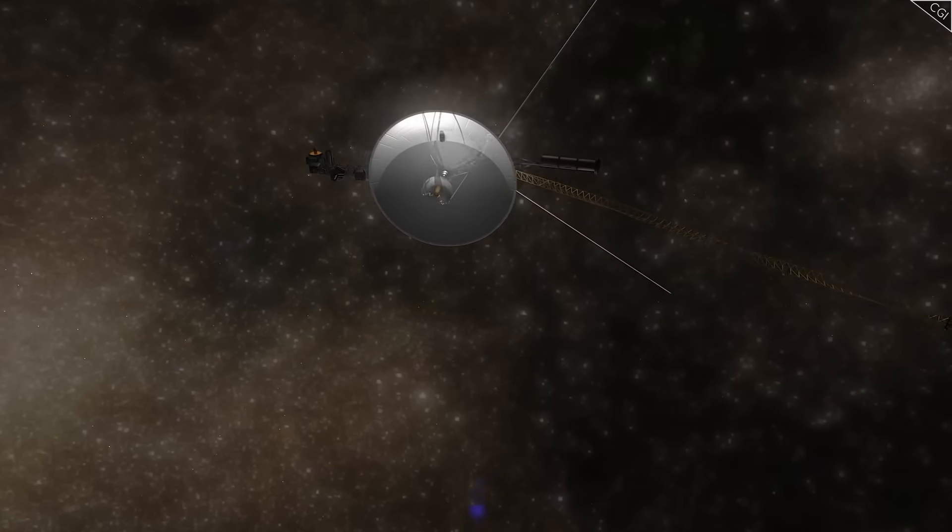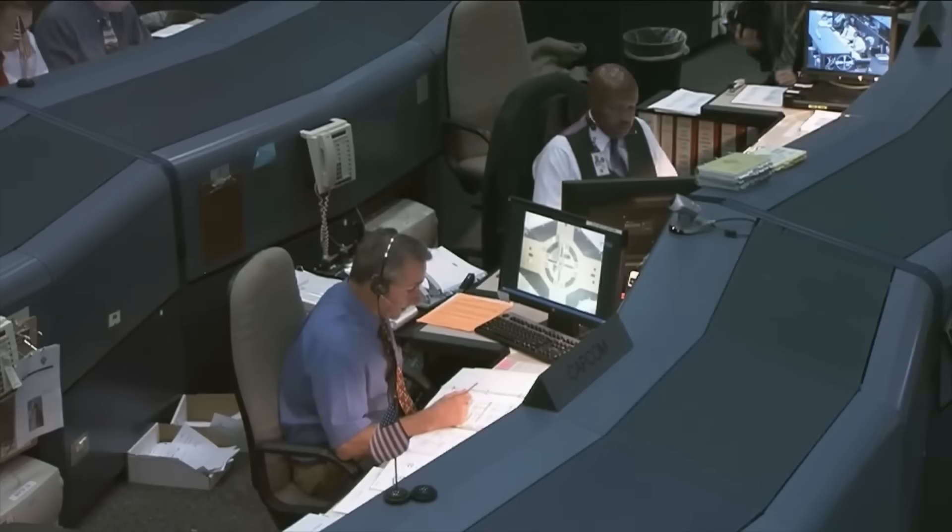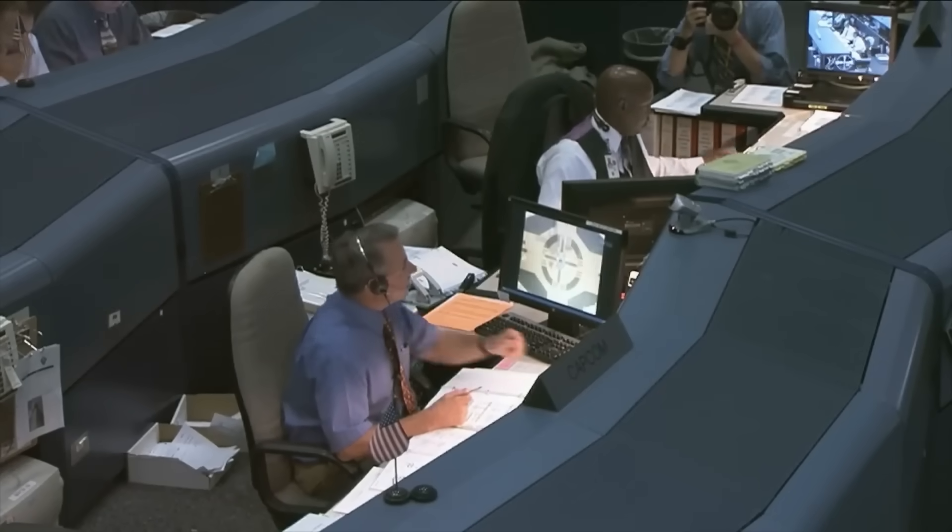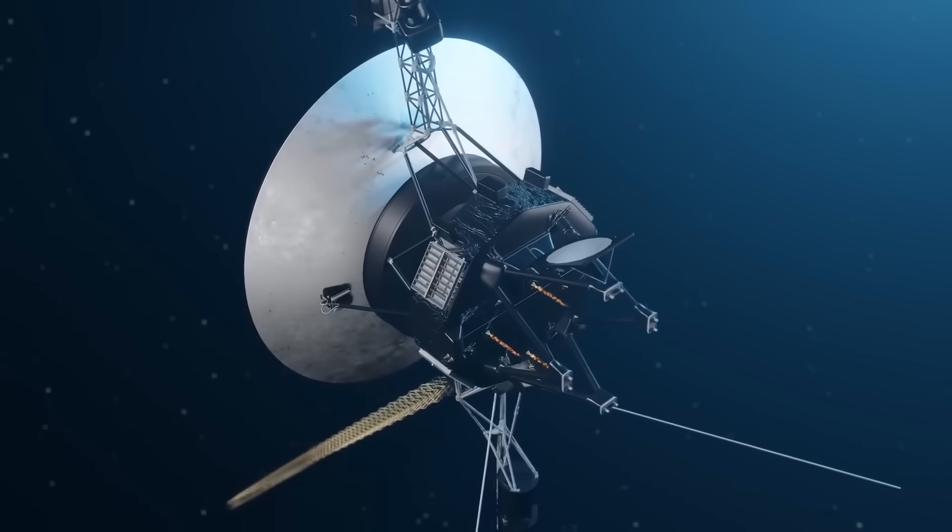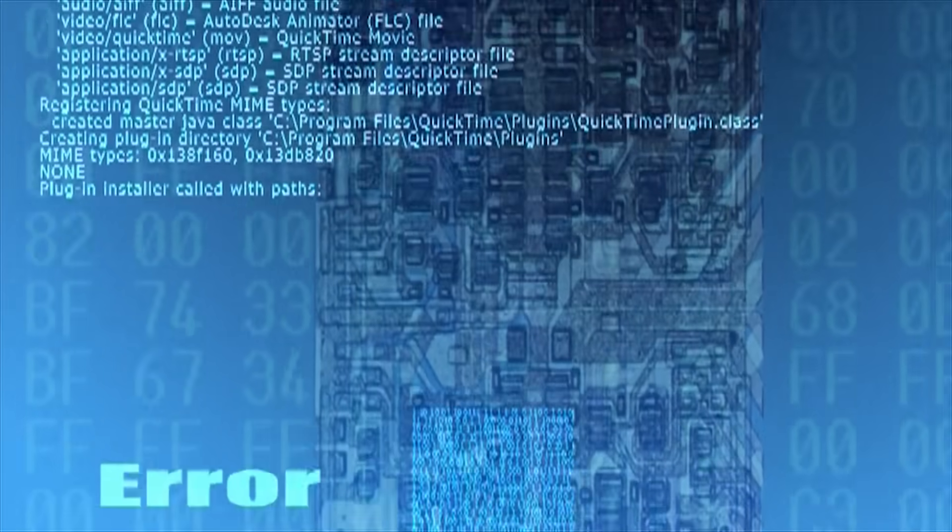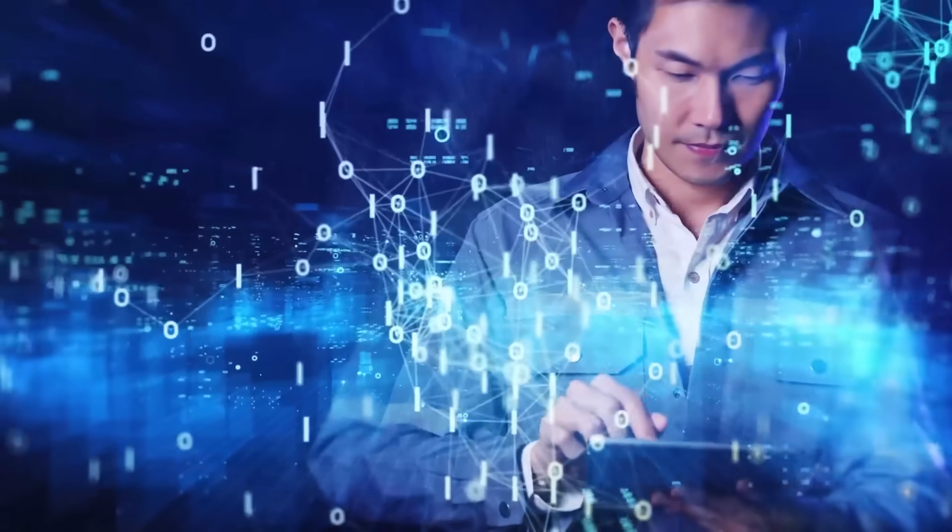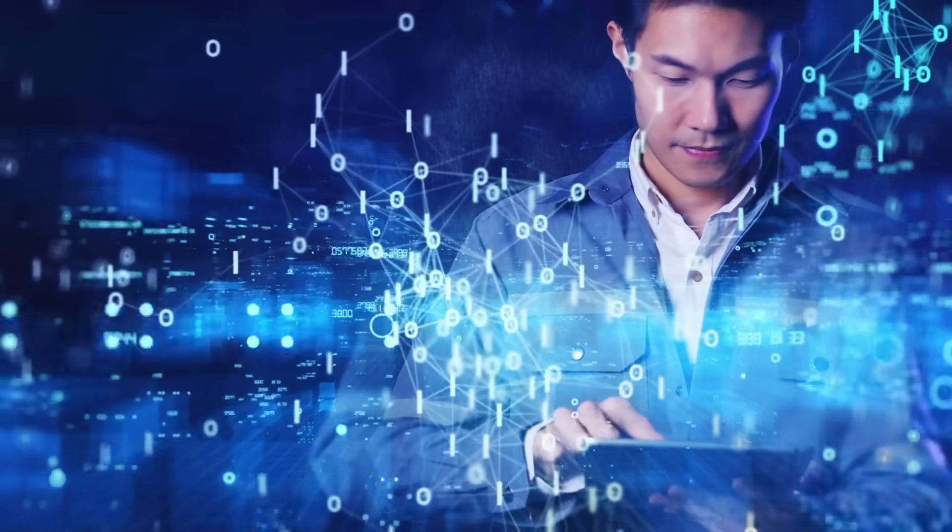Shortly after the interaction spike between Voyager 1 and 3i Atlas, NASA's Deep Space Network registered an unexpected anomaly. The Voyager transmission logs included a packet of data that didn't match the original code framework embedded in its onboard systems. When engineers attempted to decode the sequence, something shocking happened. The system began rewriting its own decoding protocol.